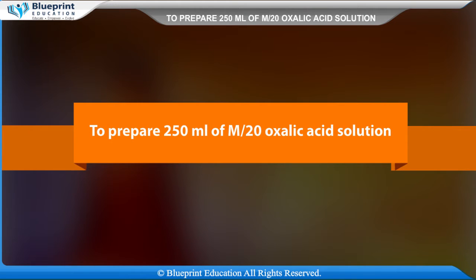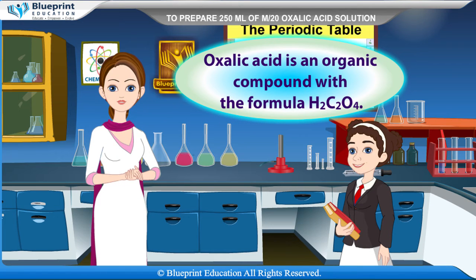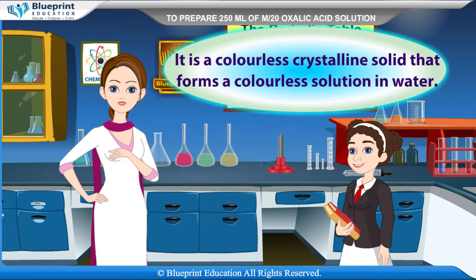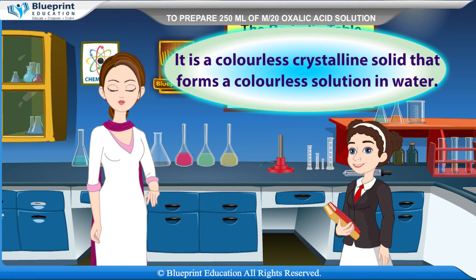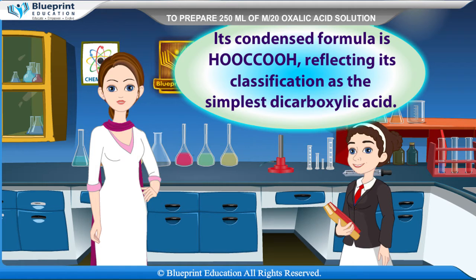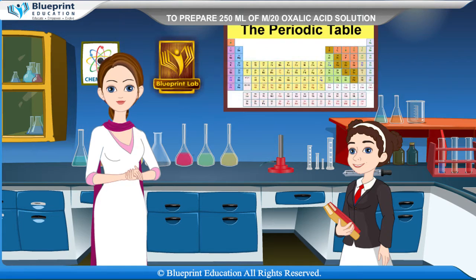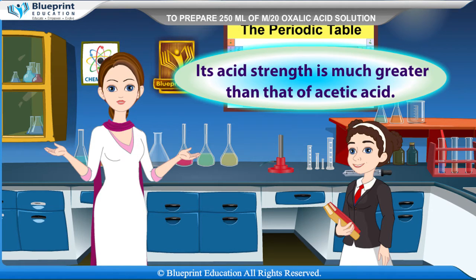To prepare 250 ml of M/20 oxalic acid solution. Oxalic acid is an organic compound with the formula H₂C₂O₄. It is a colorless crystalline solid that forms a colorless solution in water. Its condensed formula is HOOCCOOH, reflecting its classification as the simplest dicarboxylic acid. Its acid strength is much greater than that of acetic acid.